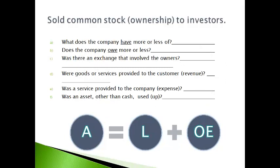In this transaction, common stock, which is shares of ownership, were sold to investors. The company received cash from the investors and gives up ownership to the investors. Nothing is owed. Customers are not involved in this transaction. Services were not received by the company, and no assets were used up. The balance sheet reports more cash and more common stock. Nothing is reported on the income statement.